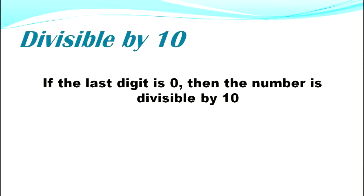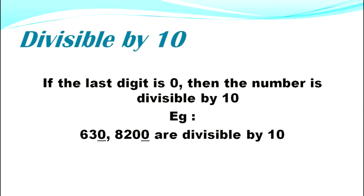Divisible by ten: if the last digit is 0, then the number is divisible by 10. Example: 630 and 8200 are divisible by 10. Thank you.